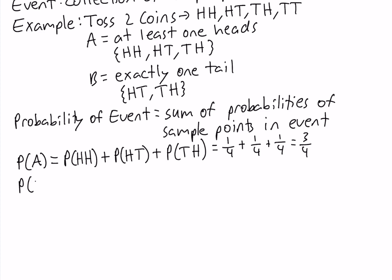The probability of event B is the sum of the probabilities of the sample points in event B, so it's the probability of head-tail plus the probability of tail-head. Again, the probability of each outcome is 1/4 because they're equally likely, using the classical method. So it's 1/4 + 1/4 = 2/4, which is 1/2 or 0.5.